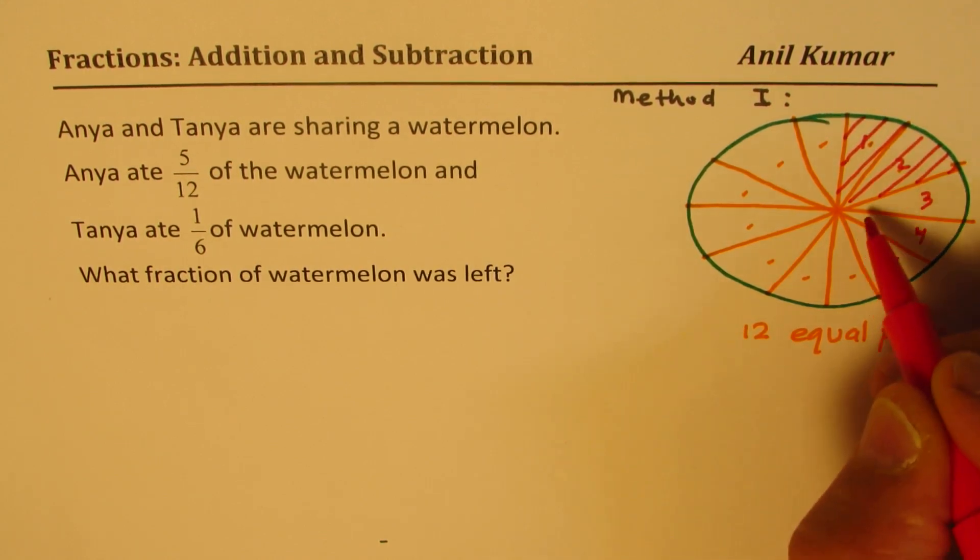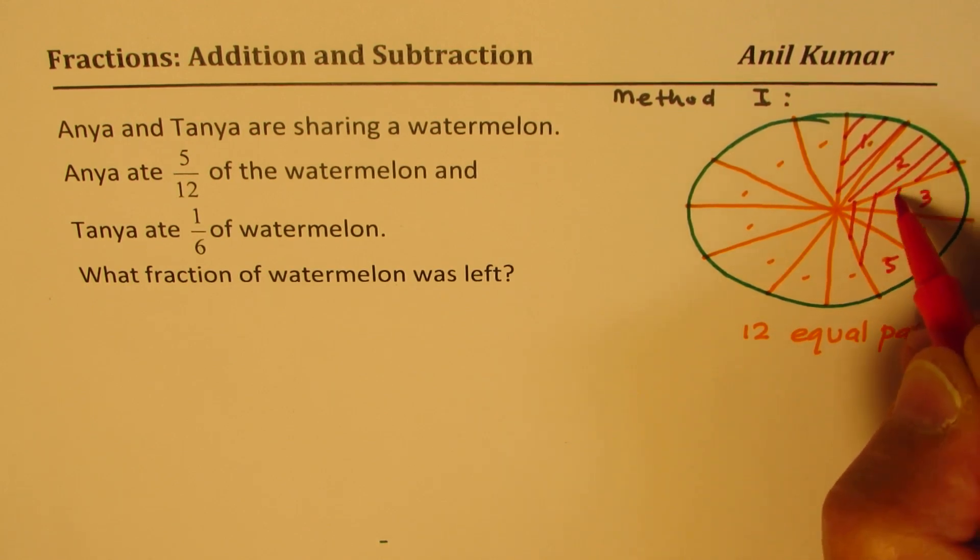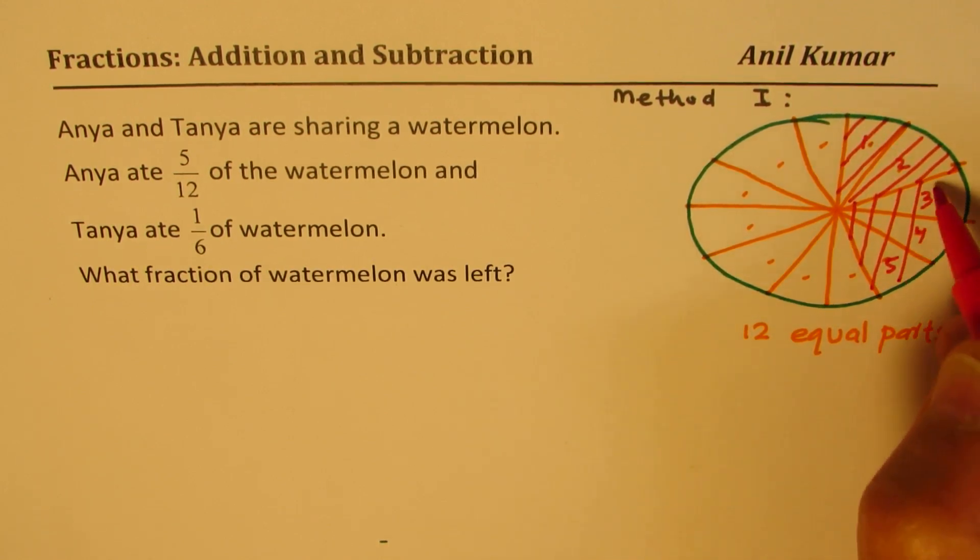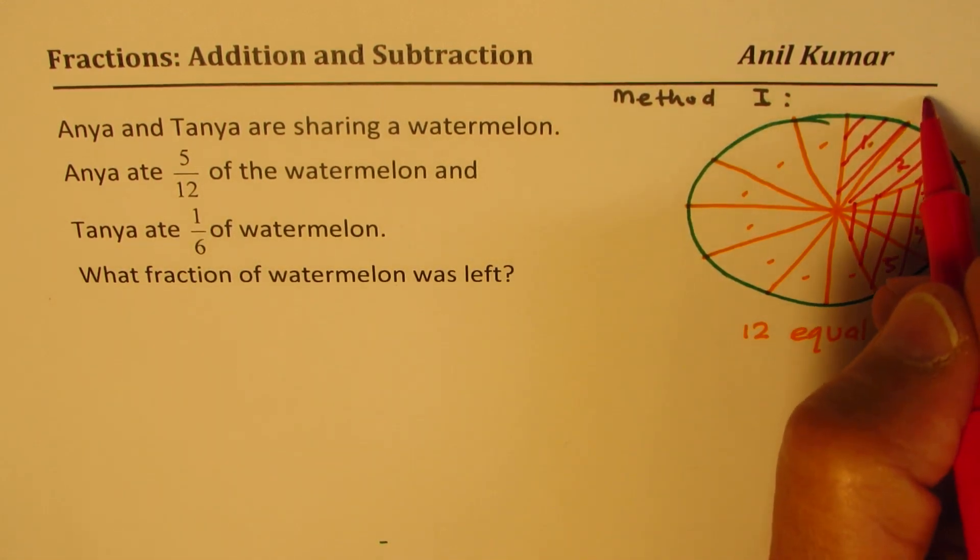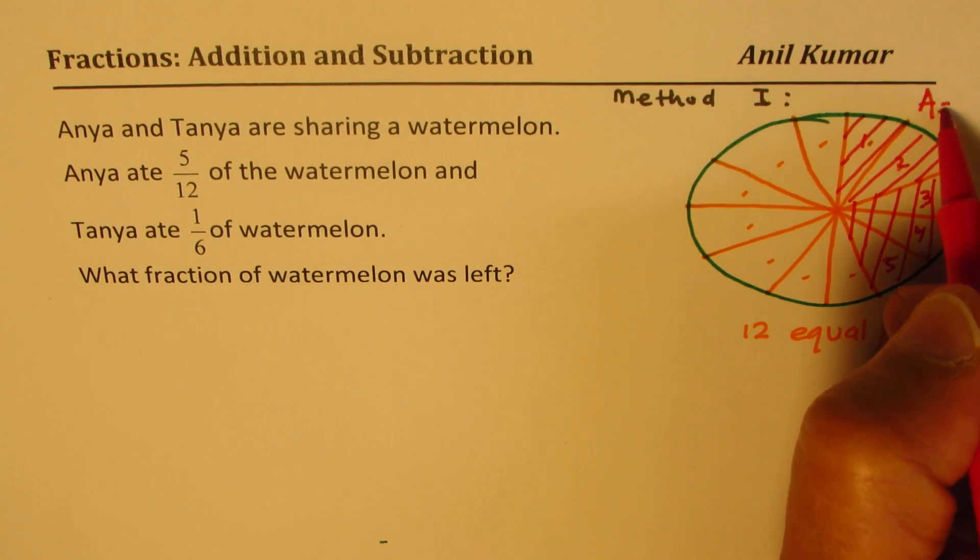So we want to shade all of them. 5/12ths. So this goes for Anya ate 5 out of 12.